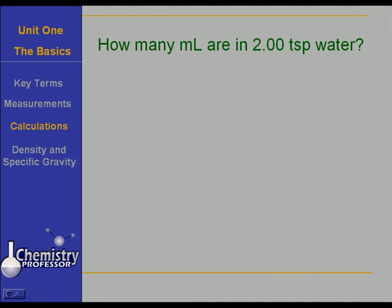Now here's a good problem. How many milliliters are in two teaspoons of water? Well, I don't know what all you've learned about English to metric, but if you've learned that there are about five milliliters in a teaspoon, then you know the answer here should come out to be about ten. Let's see if it does.